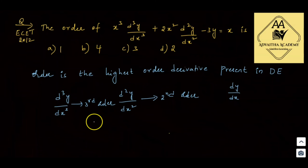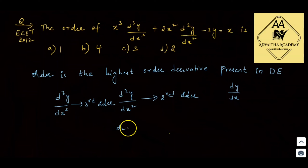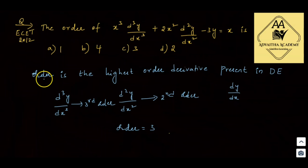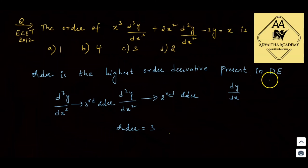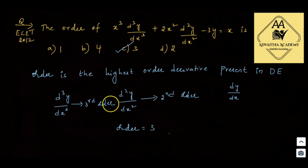The total equation has the third order derivative. The differential equation is third order. Order is the highest order derivative present in the differential equation. The answer is option C.